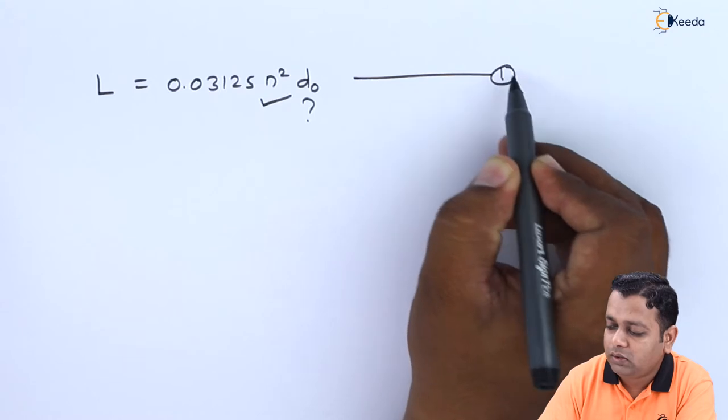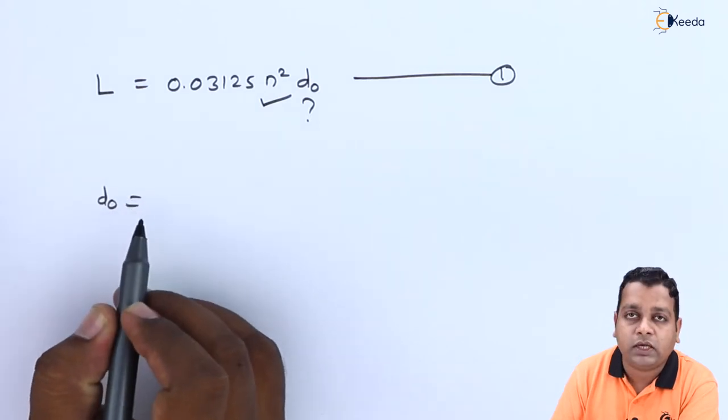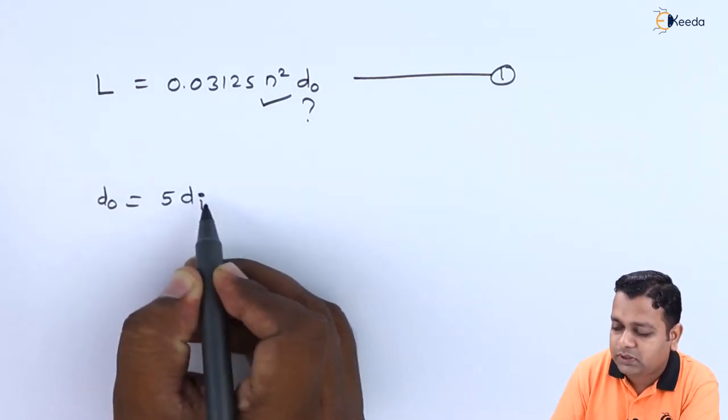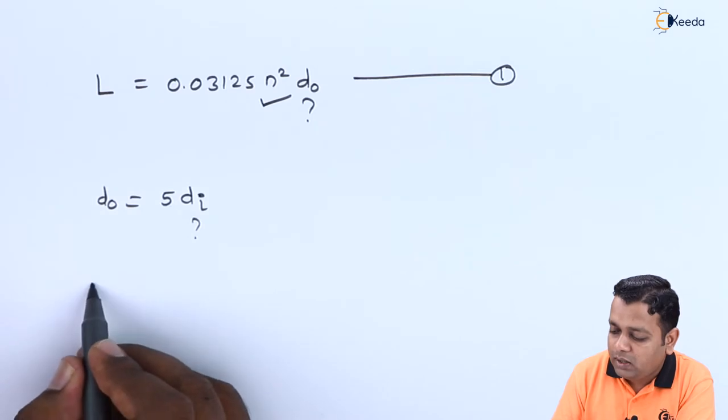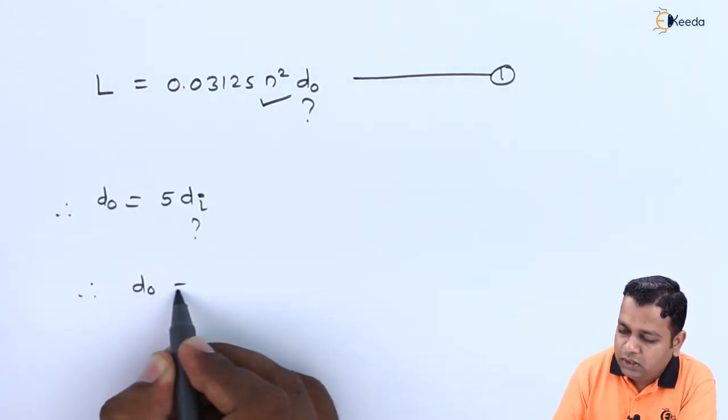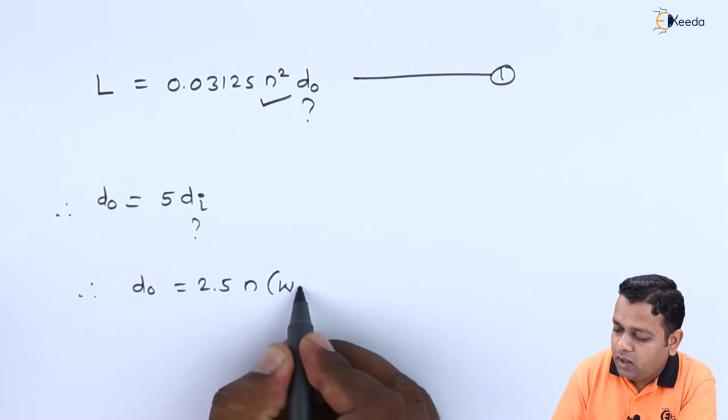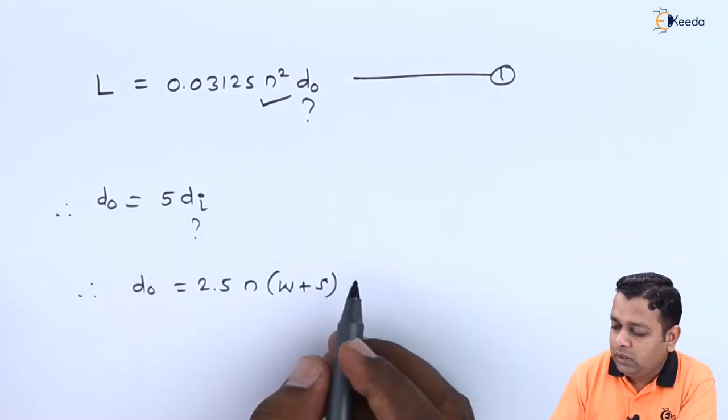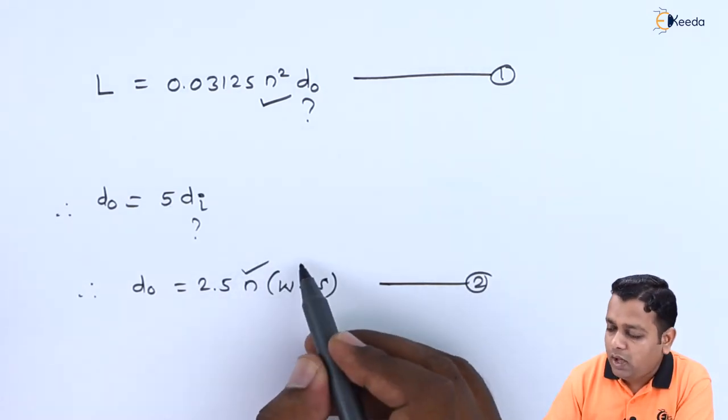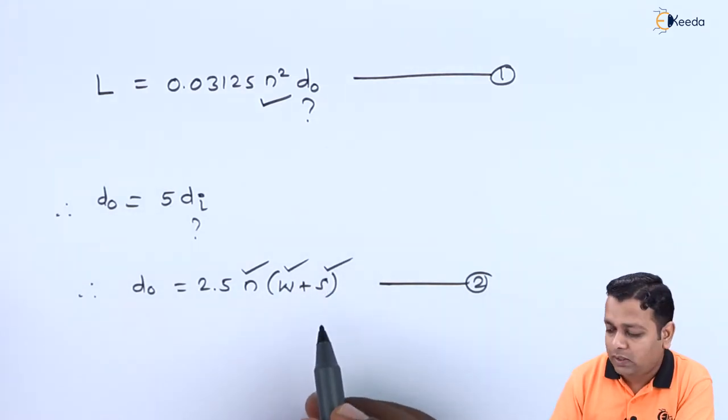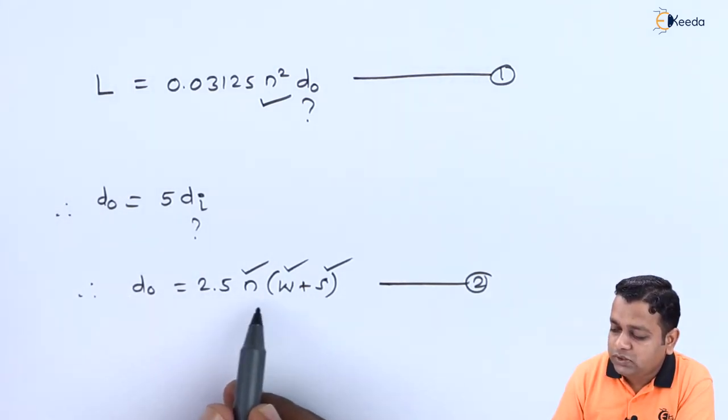Let us mark this equation as equation number 1. d₀ can be expressed as d₀ = 2.5 × n × (w + s). Let us represent this as equation number 2, where the value of n, width w, and separation s are all available to us for the case of this inductor. So let us make substitutions to this equation.